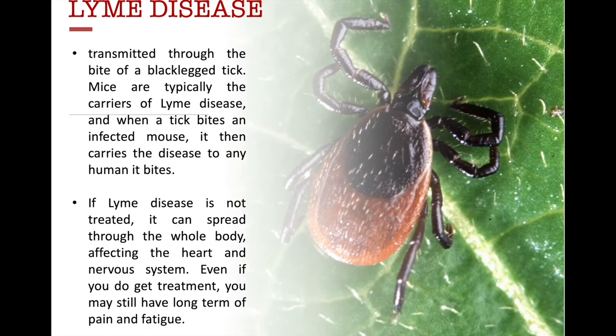A third example of zoonotic disease is Lyme disease. This is transmitted through the bite of a black-legged tick. Mice are also typically the carriers of Lyme disease, and when a tick bites an infected mouse, it then carries the disease to any human it bites. If Lyme disease is not treated, it can spread through the whole body, affecting the heart and the nervous system. And even if you do get treatment, you may still experience long-term pain and fatigue.